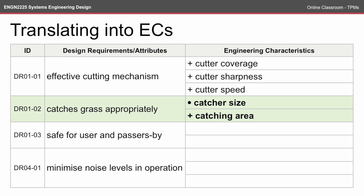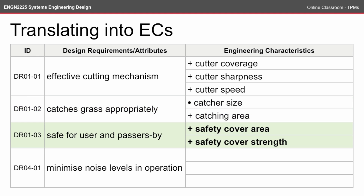For 'catches grass appropriately,' you'll notice that in the catcher size we have a bullet, indicating this needs to be optimized to a certain value — not too much over or under our benchmark. The subtle difference is that we look to exceed the benchmark value for cutter coverage, but we want to optimize the catcher size. We also want to increase the catching area, so however the lawnmower catches the grass, we want it to grab as much as possible.